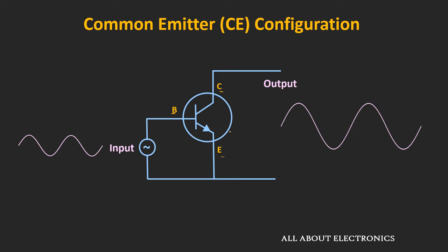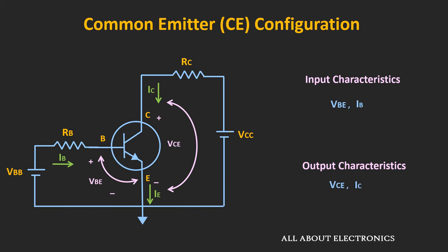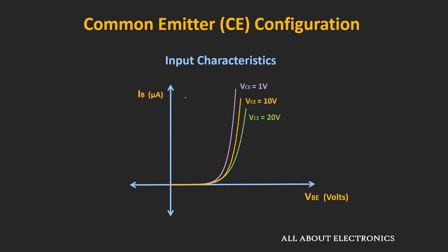In this configuration, to understand the behavior of the device, we need to understand two types of characteristics: the input characteristics and the output characteristics. The input characteristics define the relationship between the base current Ib and the voltage Vbe. Similarly, the output characteristics define the relationship between the collector current Ic and the voltage Vce. In the input characteristics, different Ib vs Vbe curves are shown for different values of Vce.